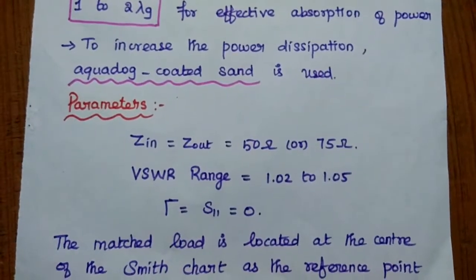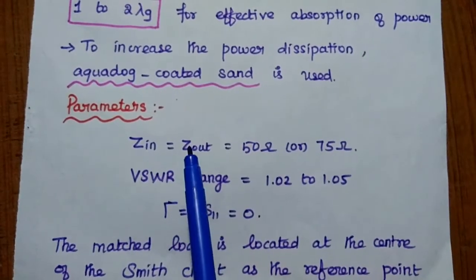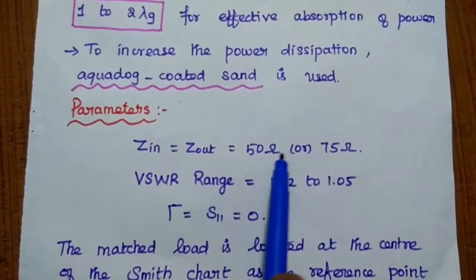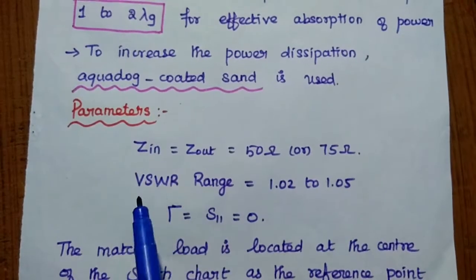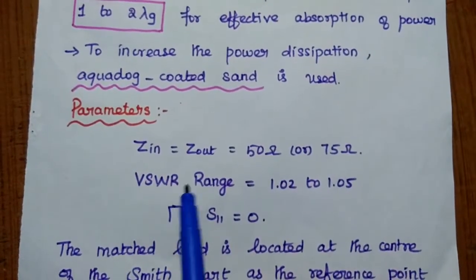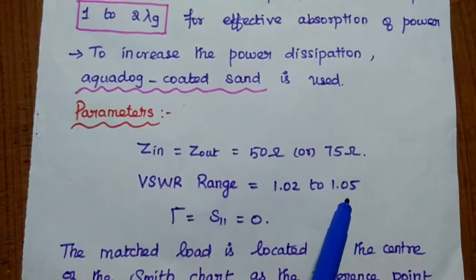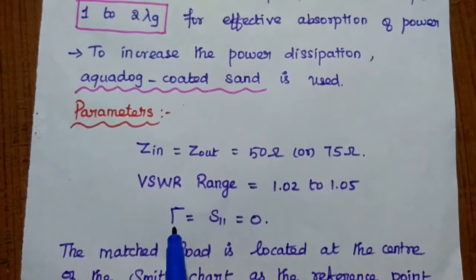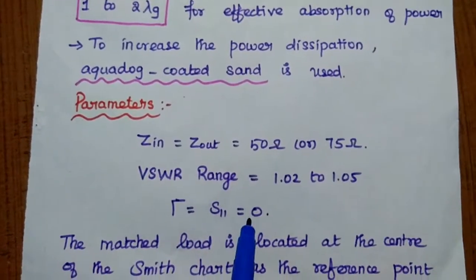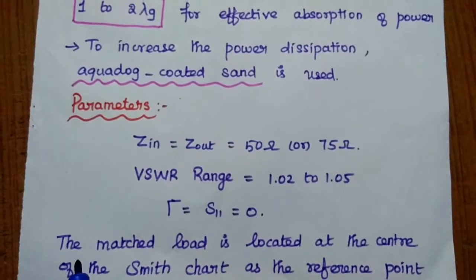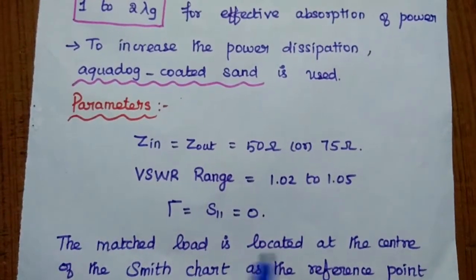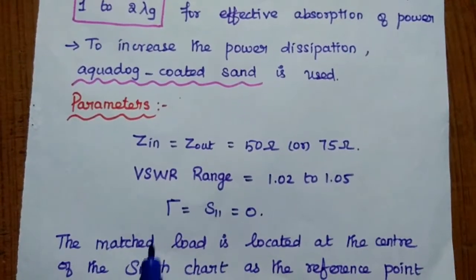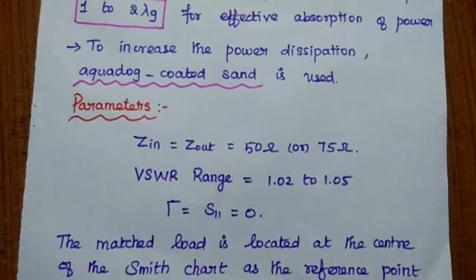The important parameters for the matched terminator are: input impedance and output impedance, both approximately equal to 50 ohm or 75 ohm. The VSWR (voltage standing wave ratio) range should be 1.02 to 1.05, which is approximately equal to 1, meaning there is no reflection — the reflection coefficient S11 equals zero. The matched terminator load is located at the center of the Smith chart as the reference point.